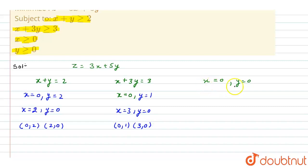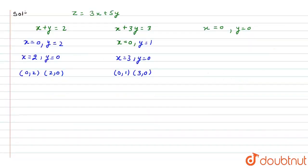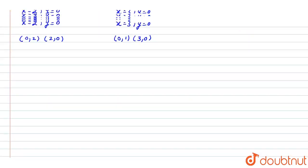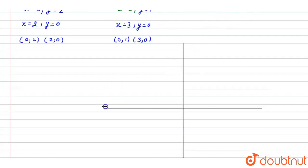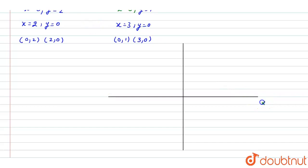Now we draw these points on the graph. We draw the x and y coordinate axes. Along the x-axis we mark 1, 2, 3, 4, and similarly on the y-axis, with each gap representing 1 unit.